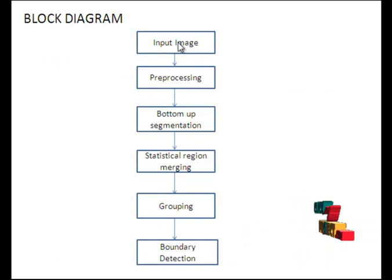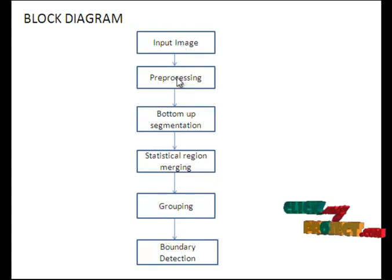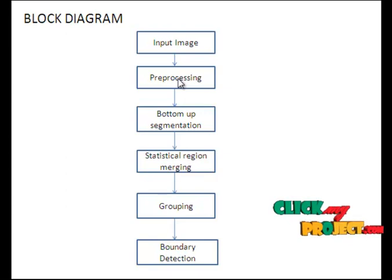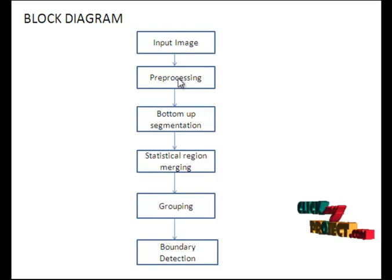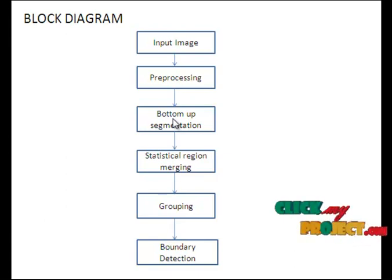This is the flow of our project. We provide an input image, which should be any type of outdoor scene image. The provided image goes to the pre-processing stage, where the image is converted to LAB color space. This separates the image based on lightness, red-green value, and yellow-blue value.